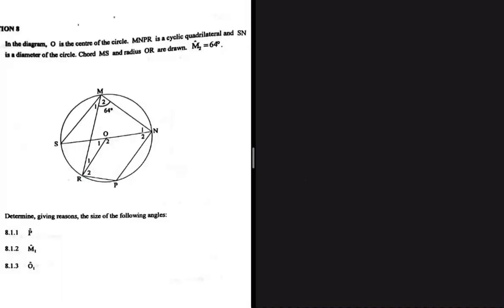Always remember, O is the center of the circle. MNPR is a cyclic quadrilateral, right? So let's just highlight MNPR. We're saying that MNPR is a cyclic quadrilateral and SN is the diameter.